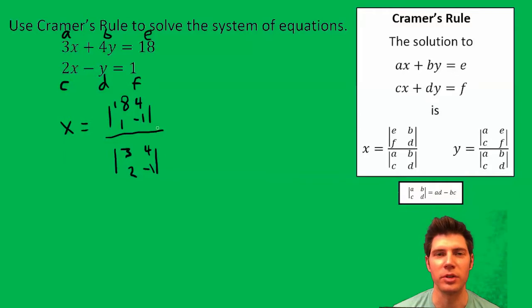So let's take these determinants first. Negative 18 minus 4. And that's going to be divided by negative 3 minus 8. This would be negative 22 over negative 11. And look at that, it came out to be 2, a nice clean number.